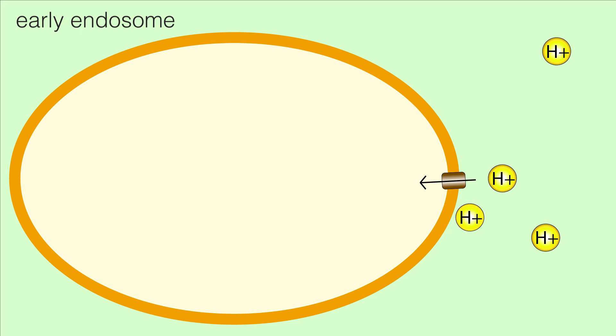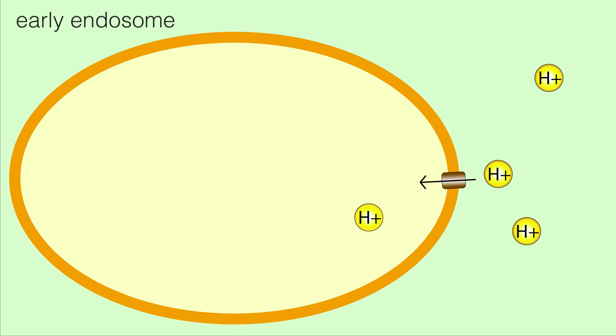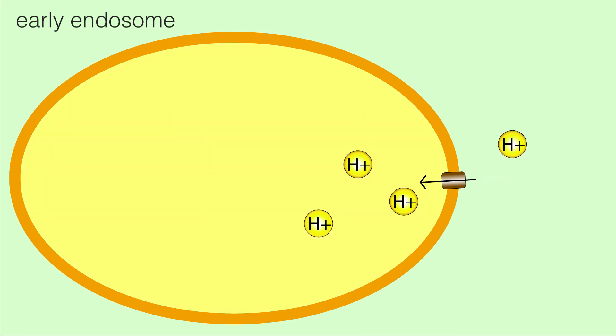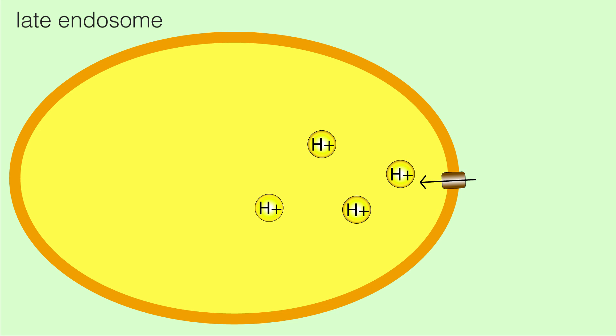The final maturation step is acidification. As mentioned earlier, endosomes contain proton pumps that continually use energy to bring protons into the endosome. Therefore, throughout endosome maturation, the pH is steadily decreasing, making late endosomes very acidic. Once these changes have occurred, the late endosome is now prepared to fuse with the lysosome.